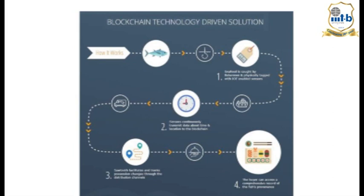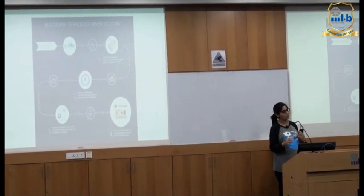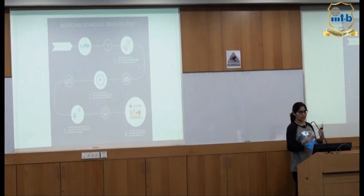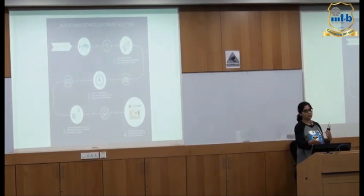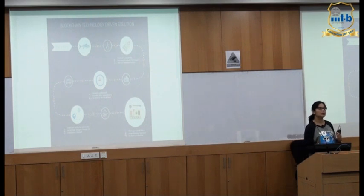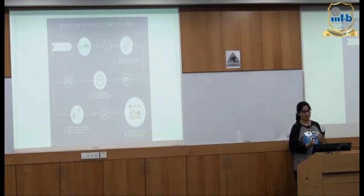An example is supply chain traceability: a fisherman catches a fish, attaches an IoT sensor, and as the fish is delivered to a consumer via different processes, data about temperature, location, and time is stored on a shared blockchain ledger. The customer, delivery person, and fisherman can all see it, and when the consumer receives the fish, they can be assured the temperature was maintained properly.